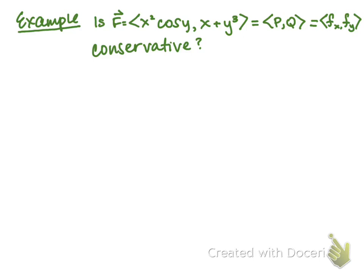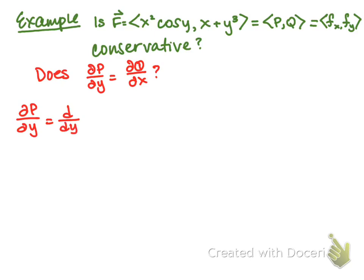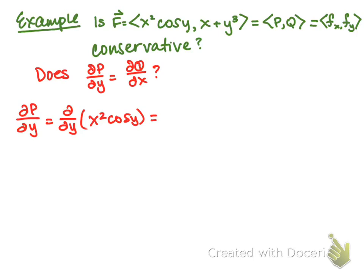We need to check whether partial P partial y equals partial Q partial x. Partial P partial y is the partial derivative with respect to y of x² cos y, which equals negative x² sin y. You can already see these are not going to be equal.